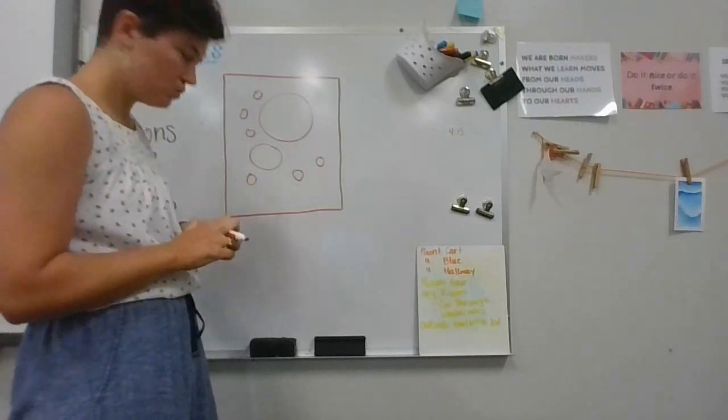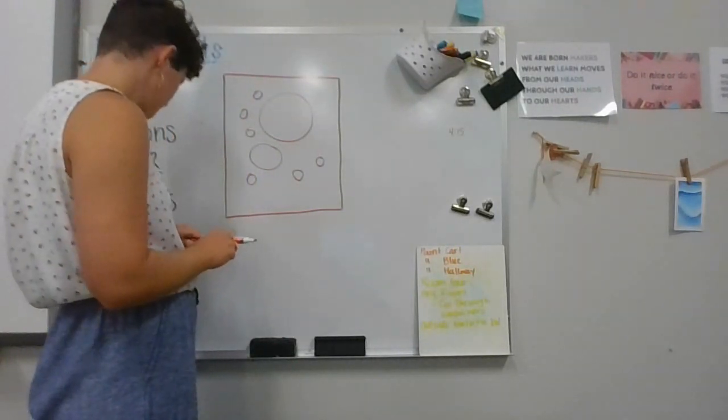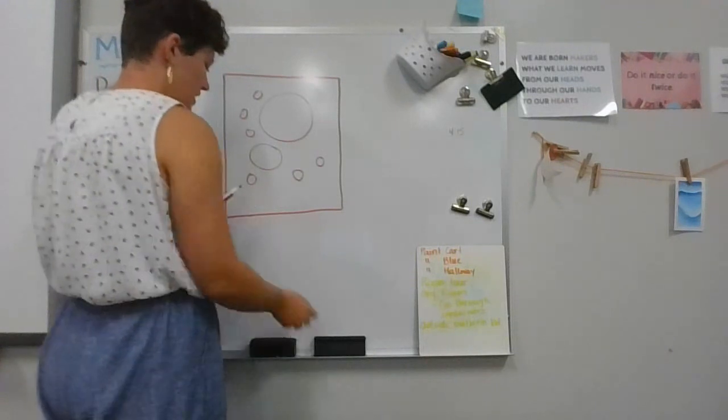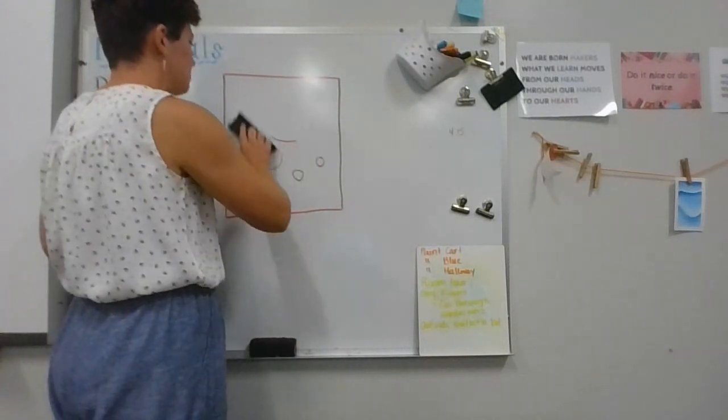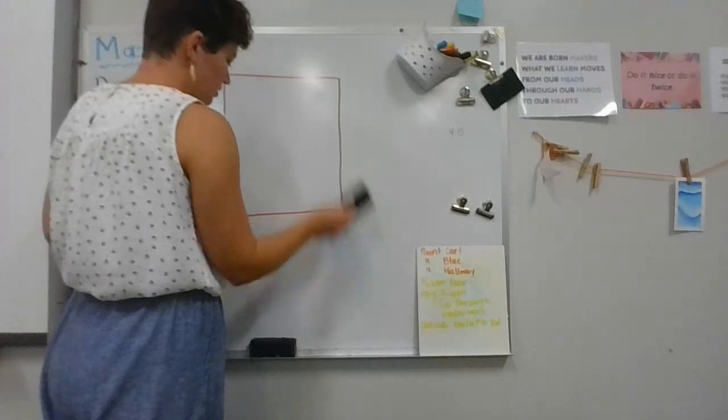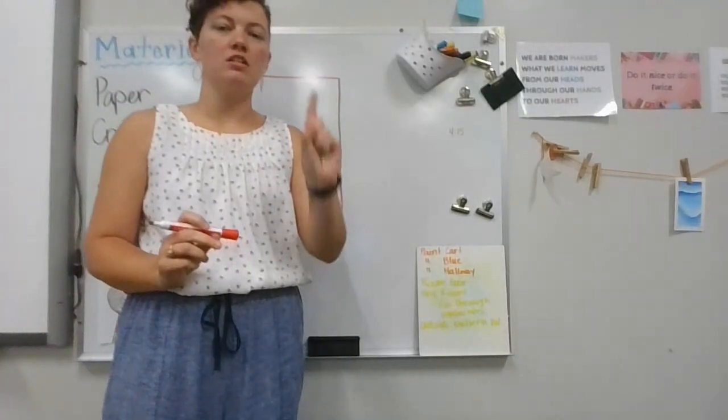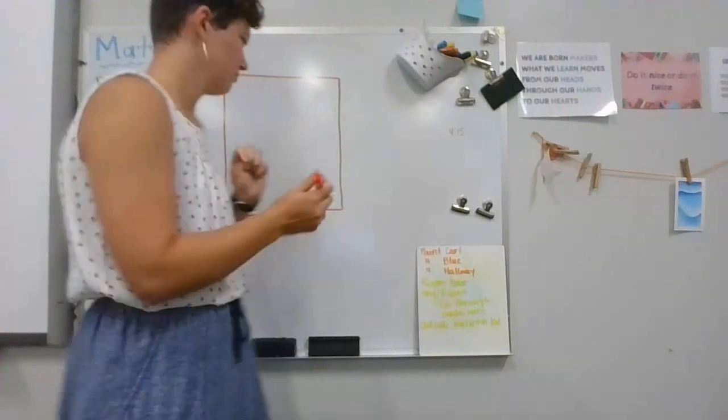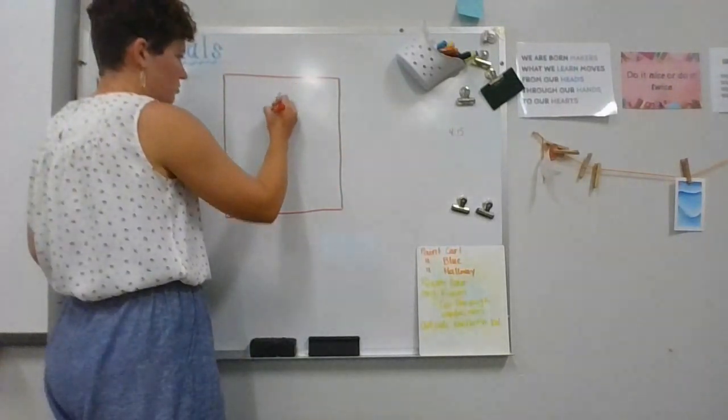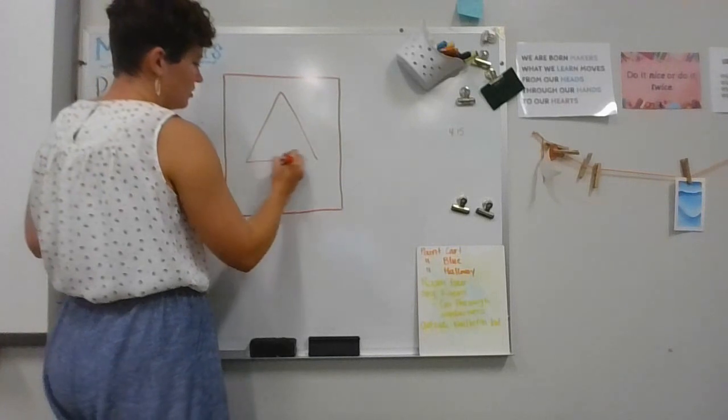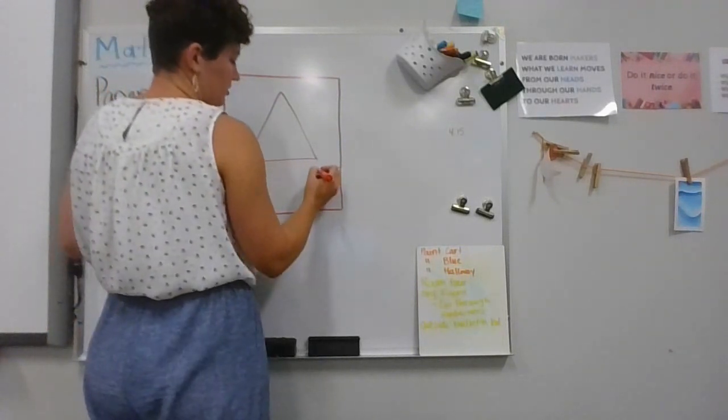So you should have circles. The next thing we need to draw is we need to practice drawing some triangles. So if we remember, our triangles have three sides: one, two, three. One, two, three. So I'm going to do some smaller ones too.